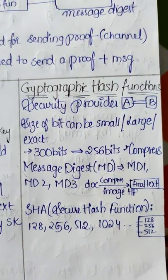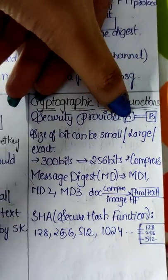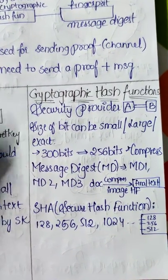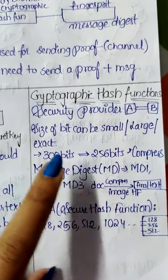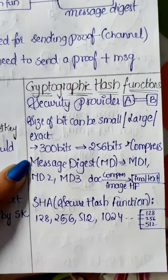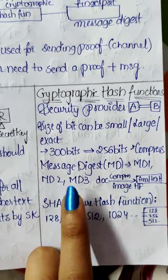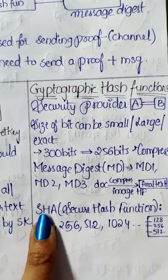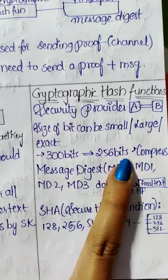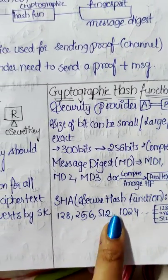Next, Cryptographic Hash Function. Cryptographic Hash Function provides security when A is transmitting data to B or B to A. There will be different sizes of bits like small, large, or exact. If there are 300 bits and you want to make it 256, it needs to be compressed. These methods are done using Message Digest, which uses a hash function. There are MD1, MD2, MD3 in Message Digest, and then Secure Hash Function. It has 128, 256, 512, and so on particular sized bits.